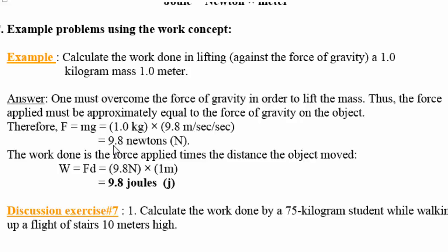When you multiply one kilogram by 9.8 meters per second squared, it yields 9.8 Newtons. This is the force applied in order to lift the object. The work done will be force times distance: 9.8 Newtons times one meter gives you 9.8 Newton-meters, which is 9.8 joules.